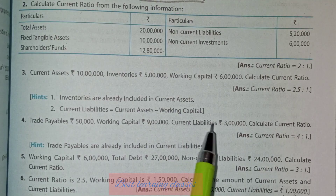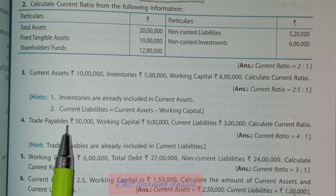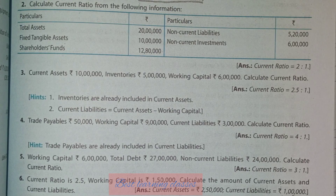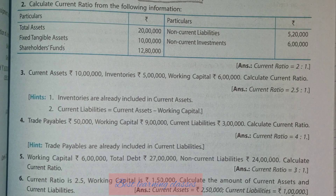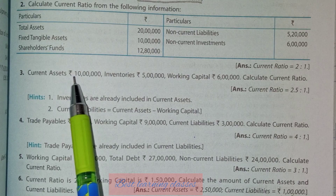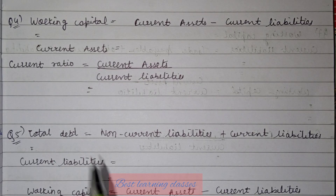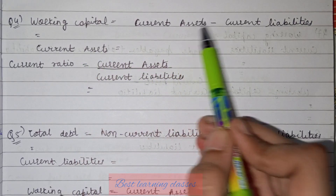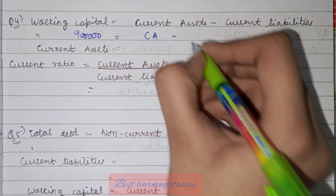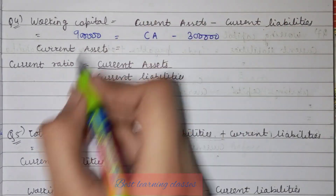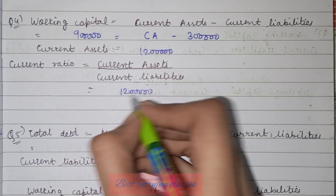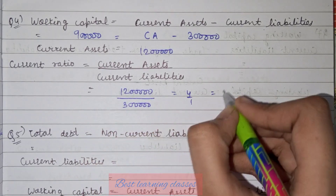Question number 4: similar approach. Here current liabilities are directly given. Trade payables are also given to confuse, but ignore them as long as the question doesn't specifically say they are excluded from current liabilities. Working capital = 9 lakh, current liabilities = 3 lakh. So current assets = working capital + current liabilities = 9 + 3 = 12 lakh. Current ratio = 12 lakh / 3 lakh = 4:1.